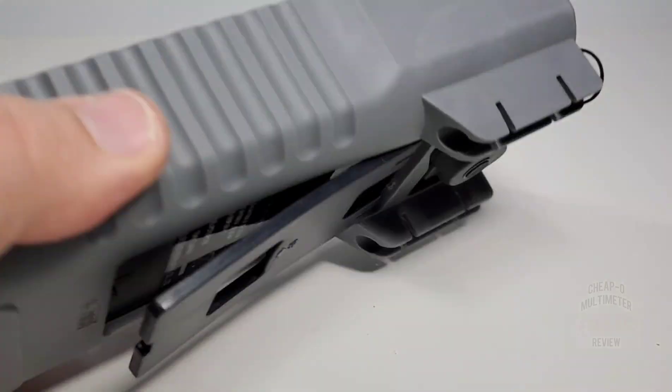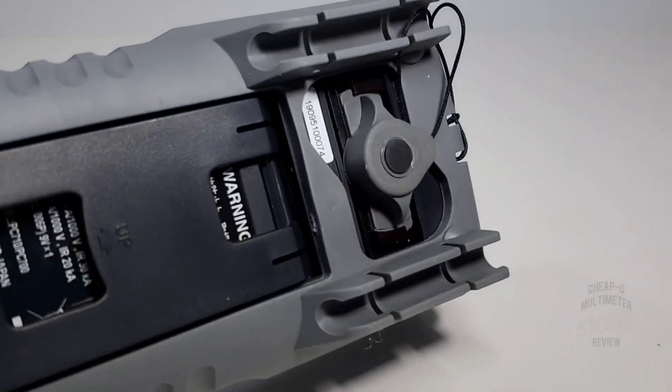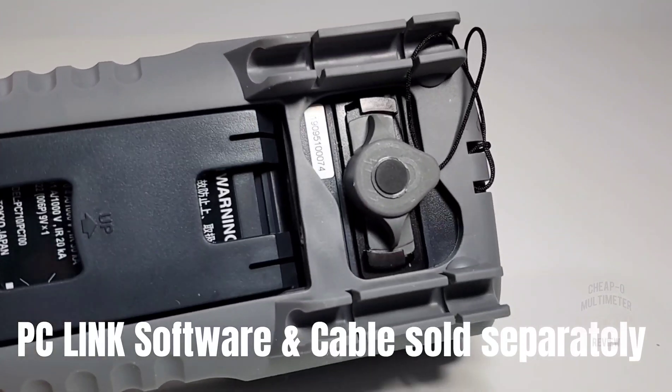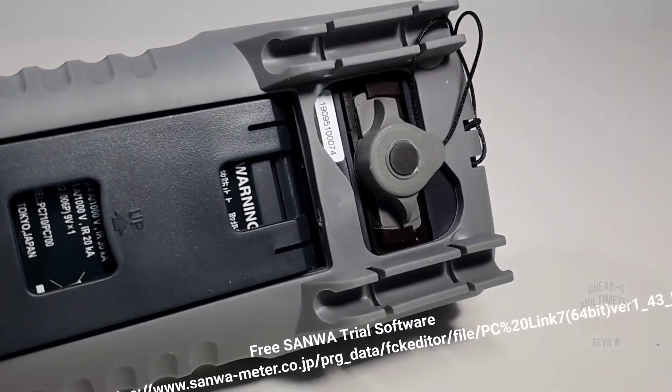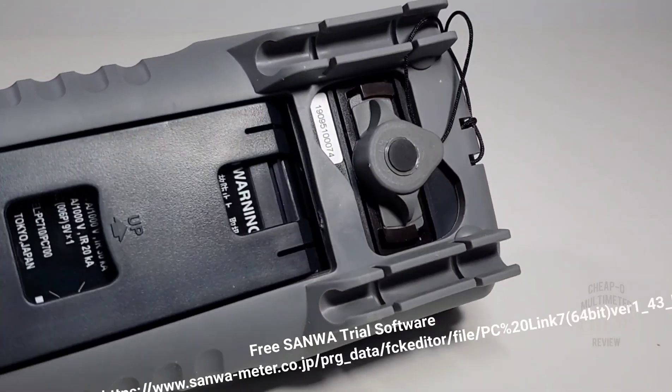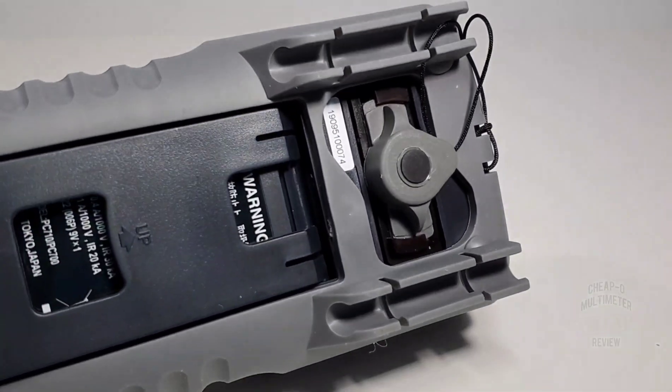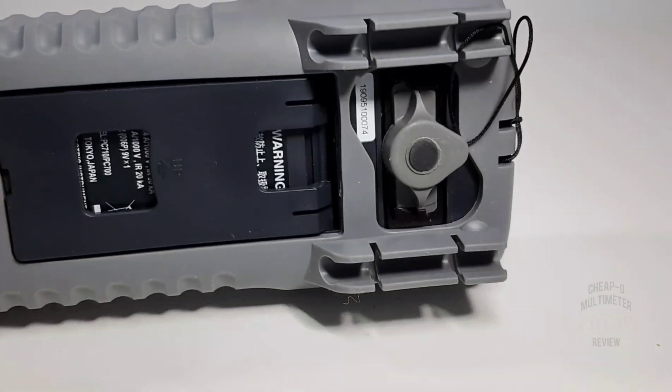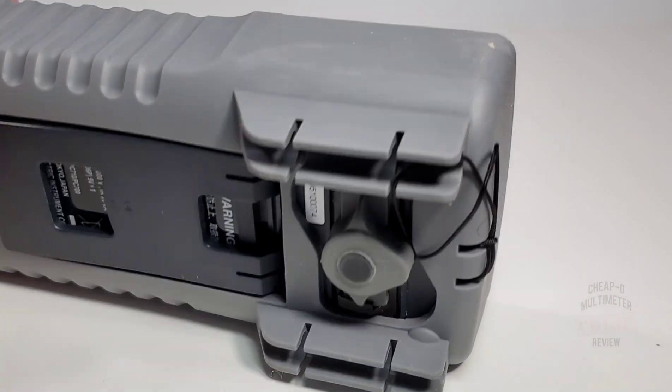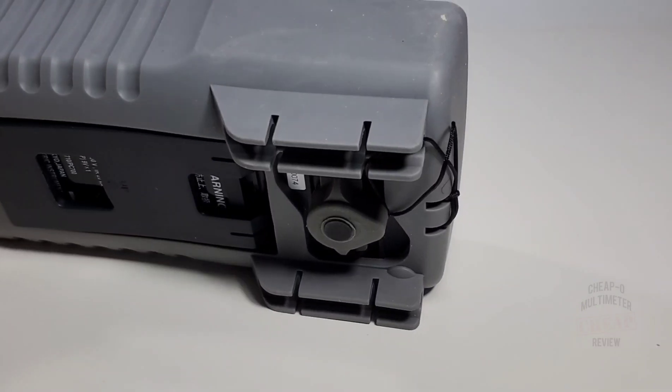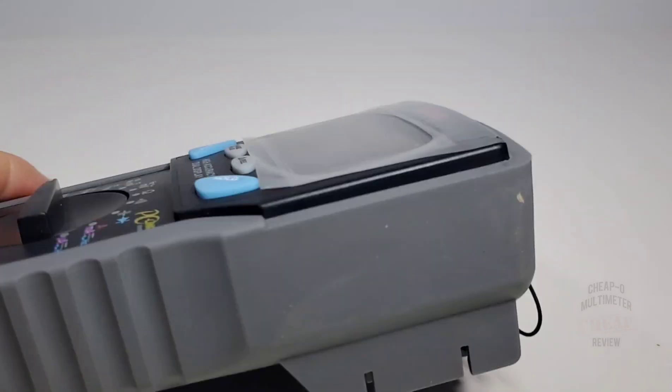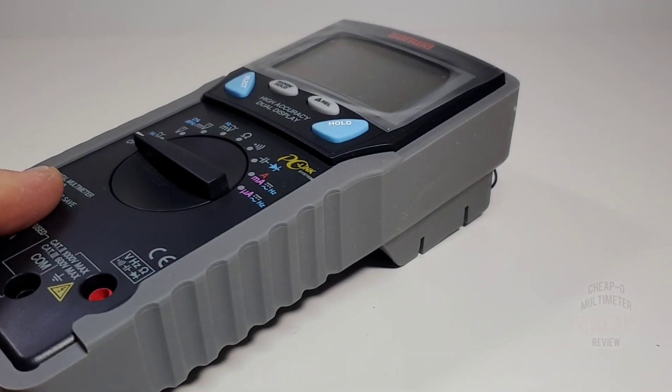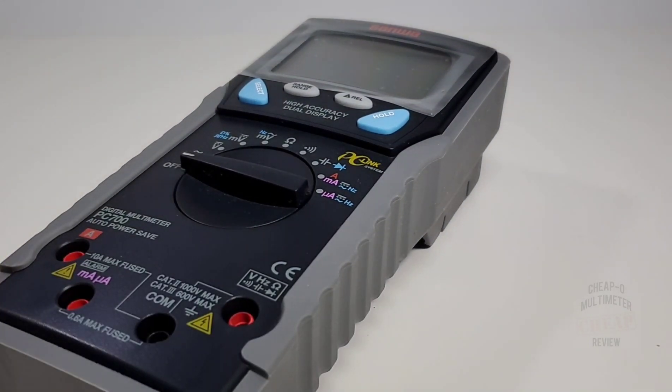Another neat feature with the Sanwa is it has a nifty little magnetic holder on the back. This also has something called PC Link. This is a separate purchase, but the PC Link software is capable of communicating via optical USB with your PC. I'm not going to be testing that out today, I do not have the software or cable, so we're not going to put that as part of the overall review. But it is an option for data logging with your PC.